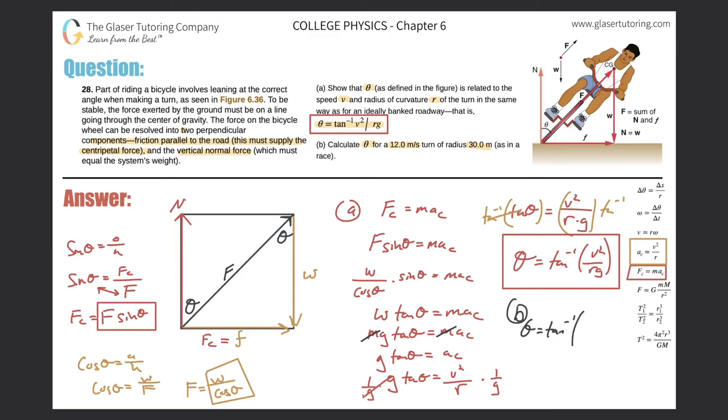Theta here is going to equal the inverse tangent of the velocity, which they gave to us as 12, that's going to be squared, divide that by the radius which was 30, multiplied by g, 9.80. I love these type of problems where they're just plugging. So inverse tangent of 12 squared divided by parenthesis 30 times 9.8, close those parentheses. And we get a value of 26.1 degrees. That is the angle.